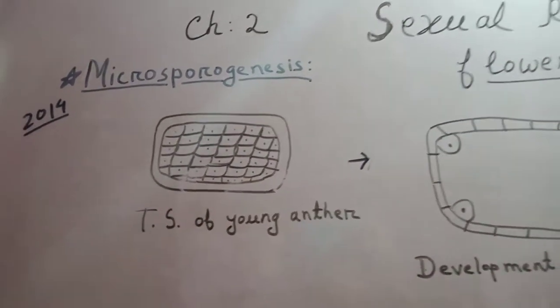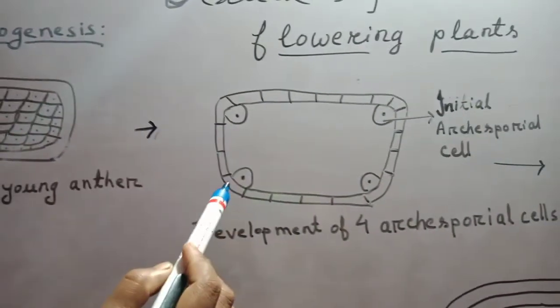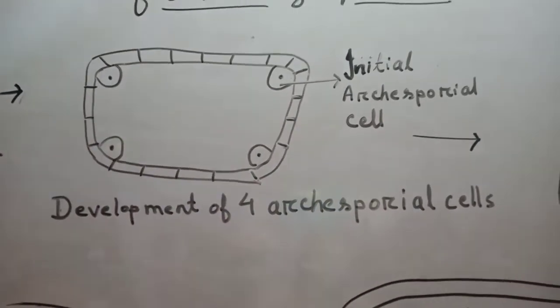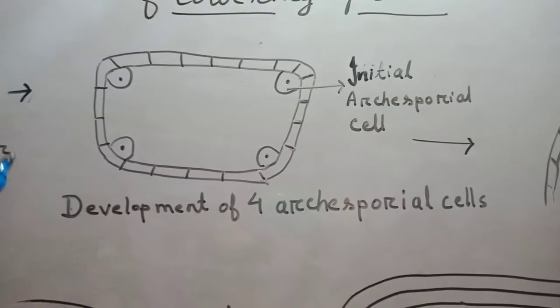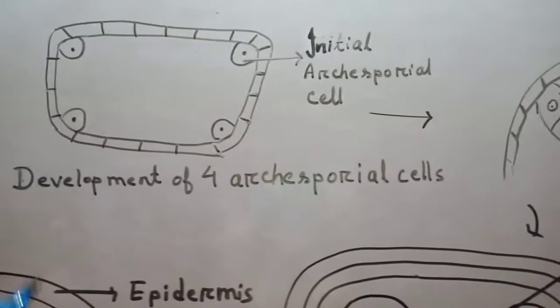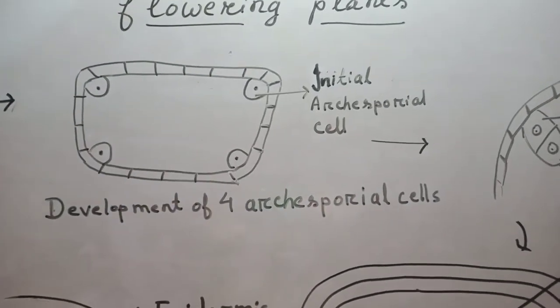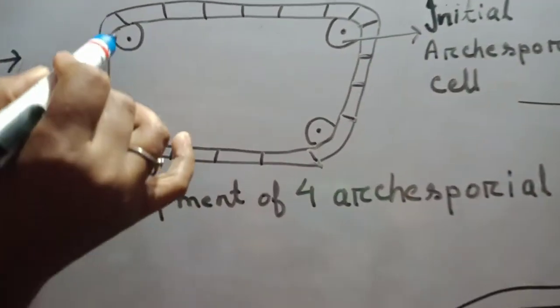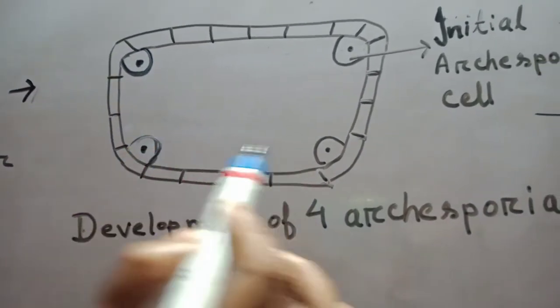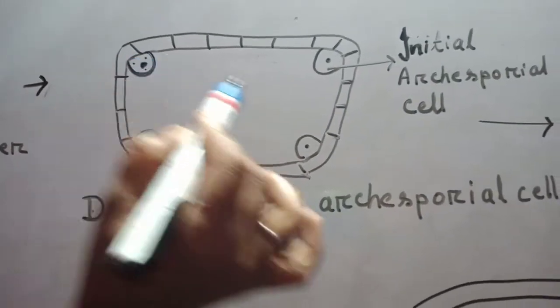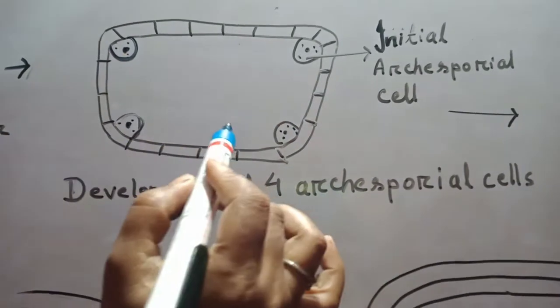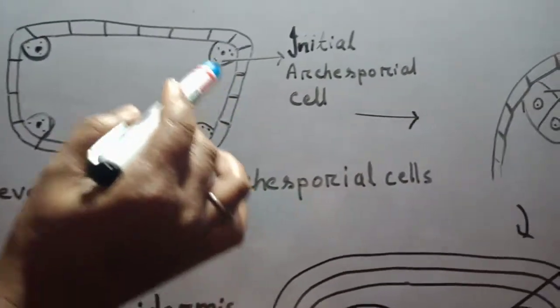During microsporogenesis, these four cells at the corner in the hypodermal region of the developing anther become differentiated by their large size, prominent nuclei and dense cytoplasm. And these four cells are called archesporial cells.